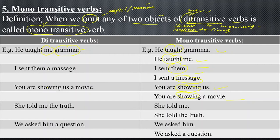Similarly, 'You are showing us a movie' — if you say 'You are showing us' or 'You are showing a movie,' then 'showing' becomes mono transitive. In the same way, 'She told me the truth' — 'told' is di-transitive because it needs two objects: indirect and direct. And 'We asked him a question' — 'him' is the indirect object and 'question' is the direct object, so 'ask' is a di-transitive verb. When you omit one, it becomes mono transitive.